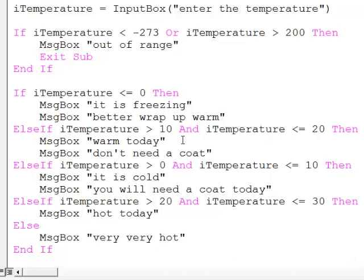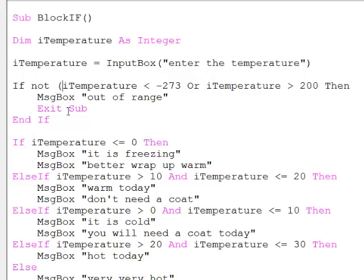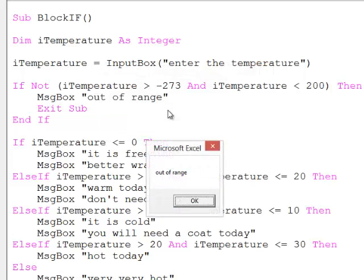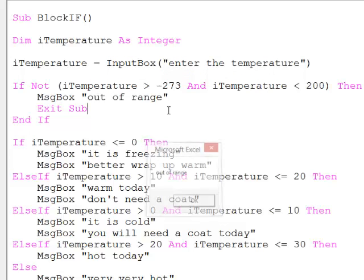There's one final logical operator that's worth a mention and that's the NOT operator and I might use it like this. If you think about what I've done here, I've said if the temperature is not greater than minus 273 and less than 200. In other words, if it's not within that range, then I know it's out of range. Let's give it a quick go. 400 is out of range. Minus 400 is also out of range.